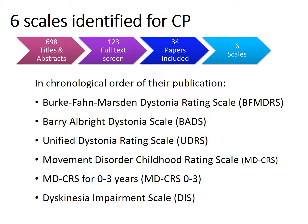In chronological order of their publication, these include the Burke-Fahn-Marsden dystonia rating scale, the Barry-Albright dystonia scale, the Unified Dystonia Rating Scale, two Movement Disorder Childhood Rating Scales for different age groups, and the Dyskinesia Impairment Scale.